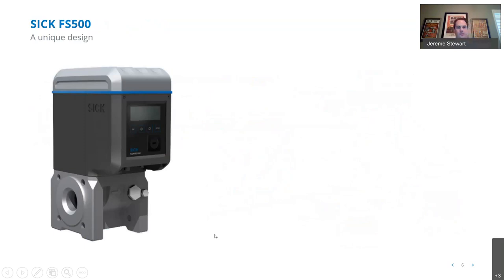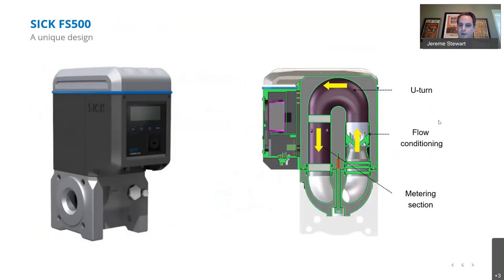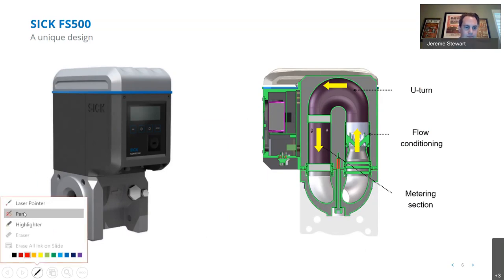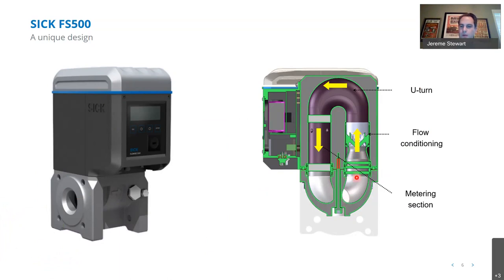Taking a look at the FS-500: it's a cartridge-style meter. It comes apart at the dark gray and light gray sections. The bottom half — with gas flowing left to right — is an aluminum bottle with pressure taps and temperature taps, allowing pressure and temperature compensation. The top part is a cartridge style, so you can replace it if needed. Inside the meter, gas flows in and comes up through a set of flow conditioners — all of this occurs internally within the cartridge, right inside the meter.